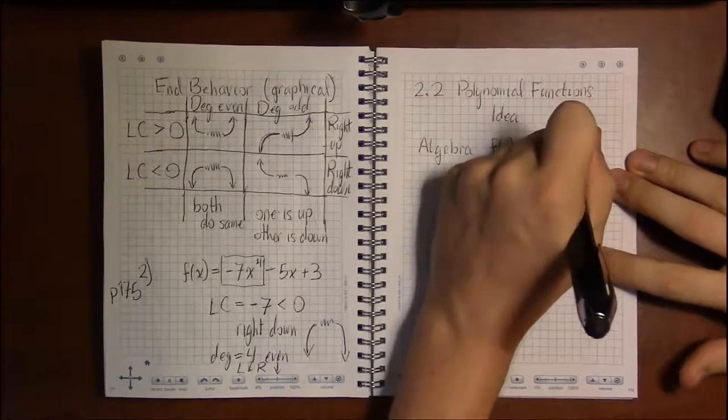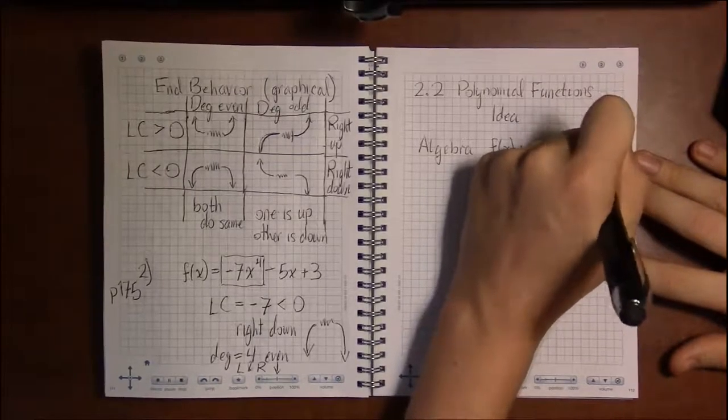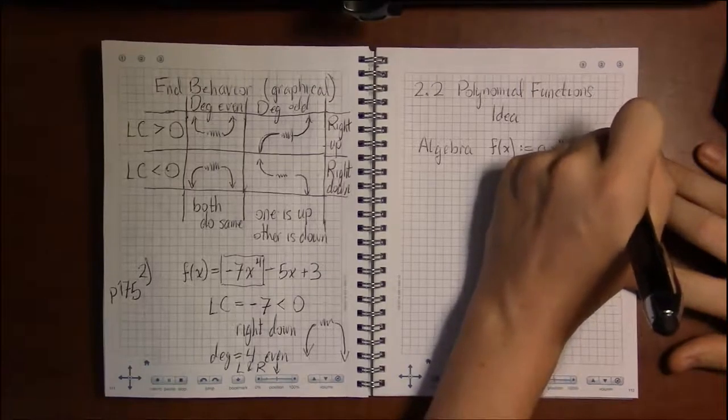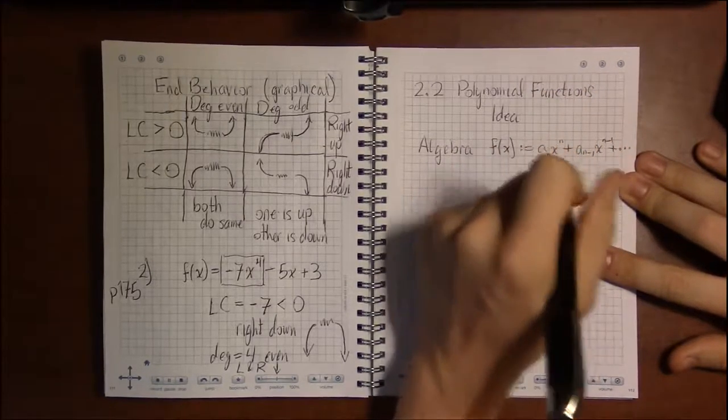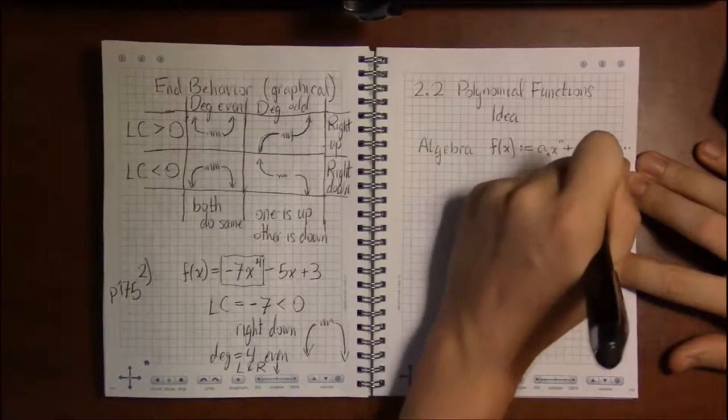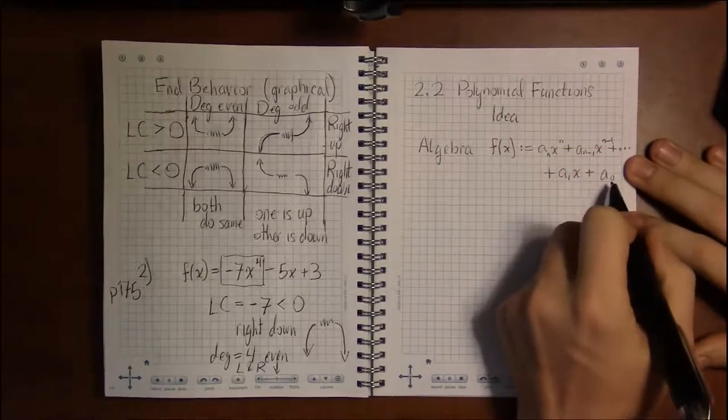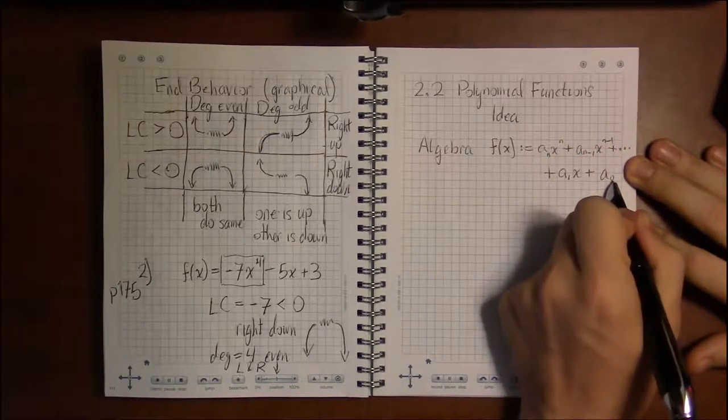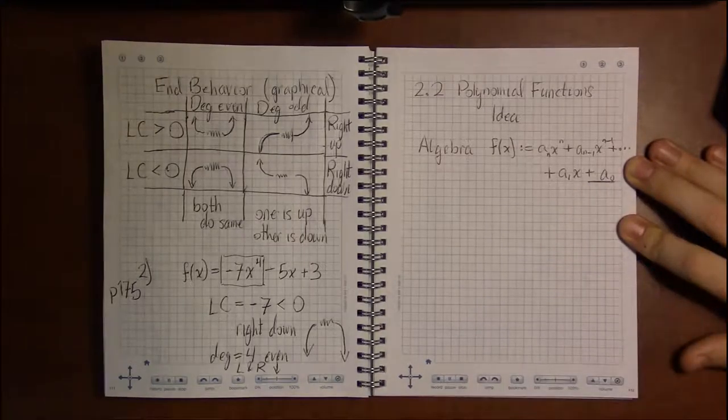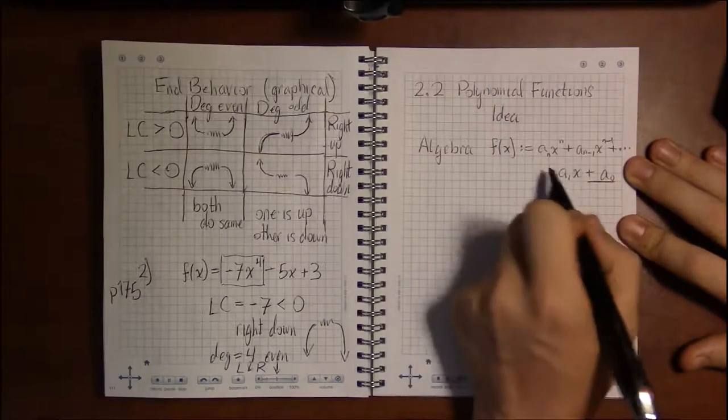Well, the easiest thing is the y-intercept, and the way the y-intercept connects with the formula is simply that the y-intercept is going to be equal to the constant term—the number that doesn't have any x on it. And if there isn't anything that's not attached to an x, then your intercept is 0.